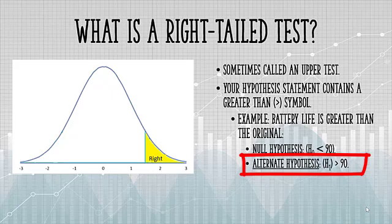When you're trying to figure out if a test is left or right-tailed, you're only interested in the alternate hypothesis sign. In other words, you can ignore the null hypothesis when making that decision.